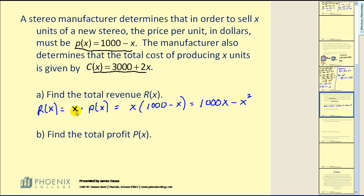The next part asks for the profit function. Remember that the profit is equal to the revenue minus cost. We just found the revenue function. Our profit function is equal to 1000x minus x squared minus the cost function. The cost function is given as 3000 plus 2x.